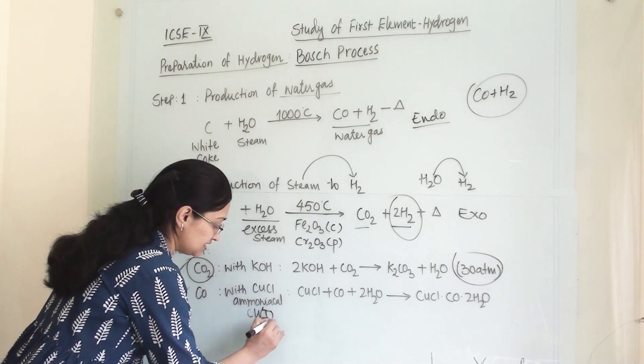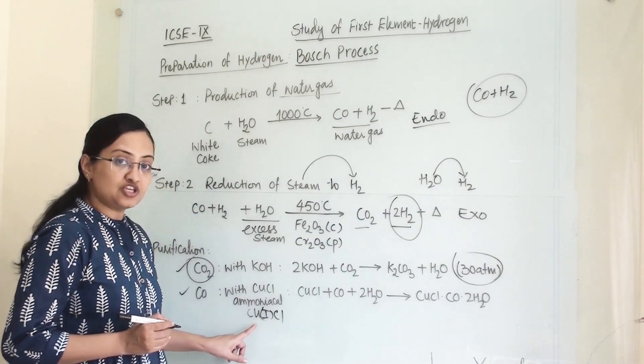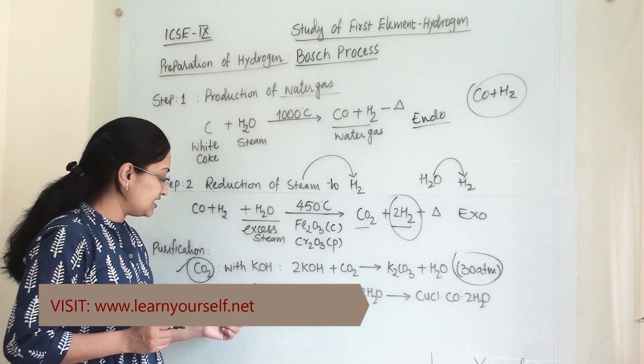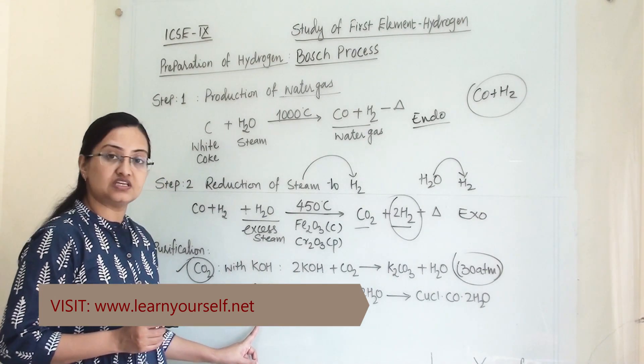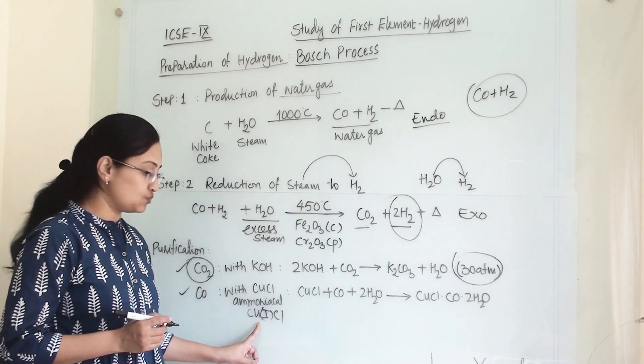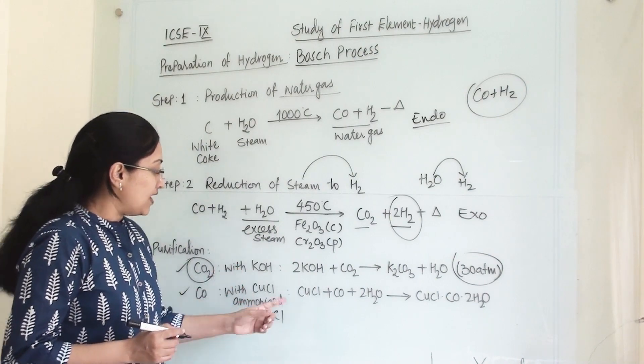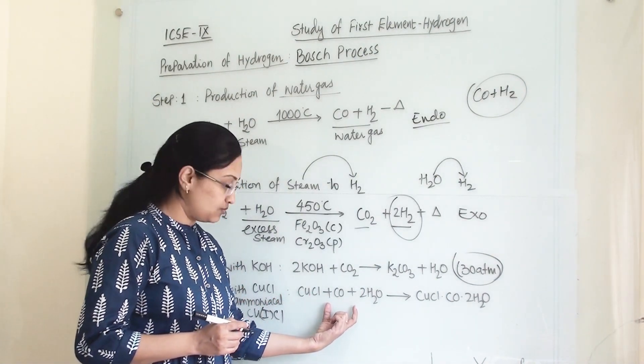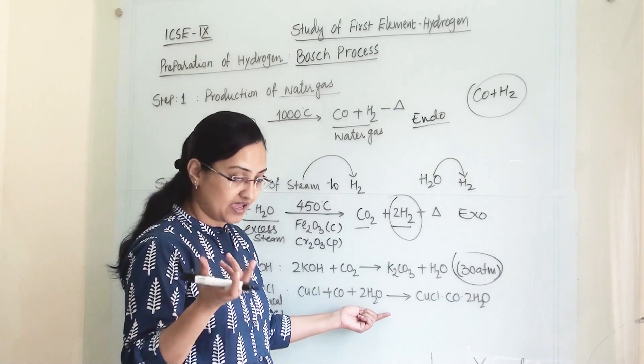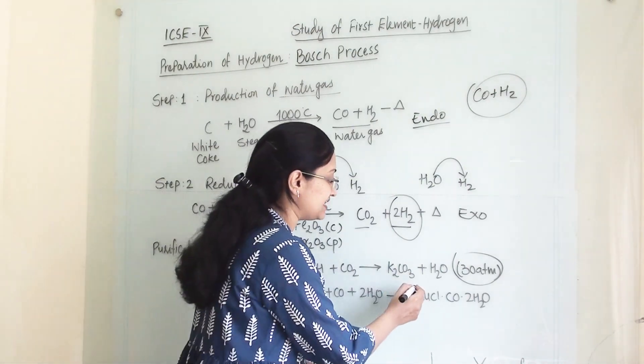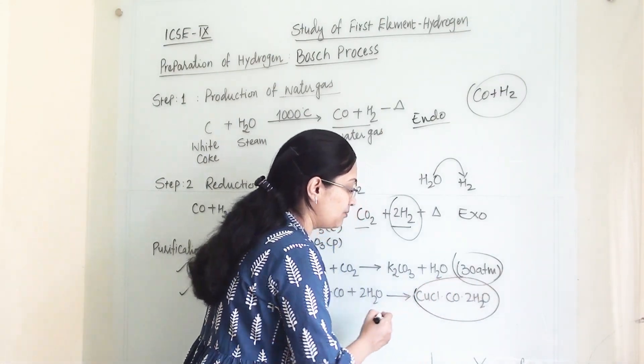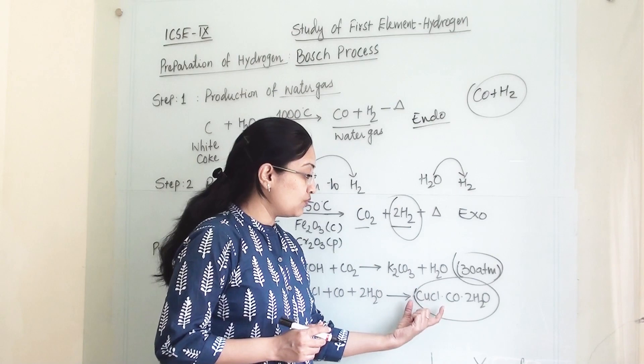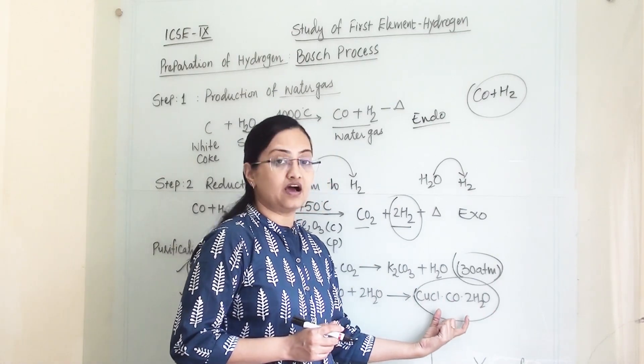Cu1Cl. If CuCl2 was there, it would be copper chloride. But here it will react with carbon monoxide and water because it is an aqueous solution. Then we will get this compound. This compound is known as copper chloride dihydrated carbon monoxide. This is a combined product of this reaction.